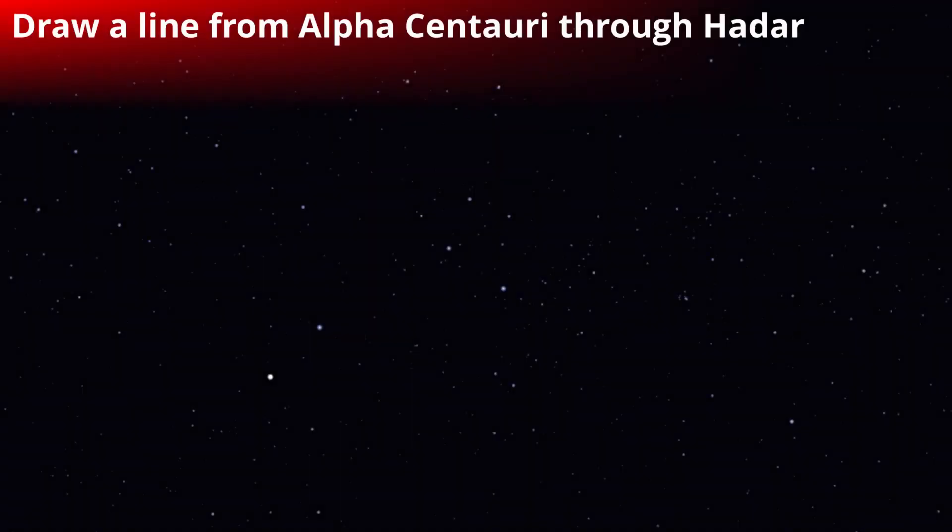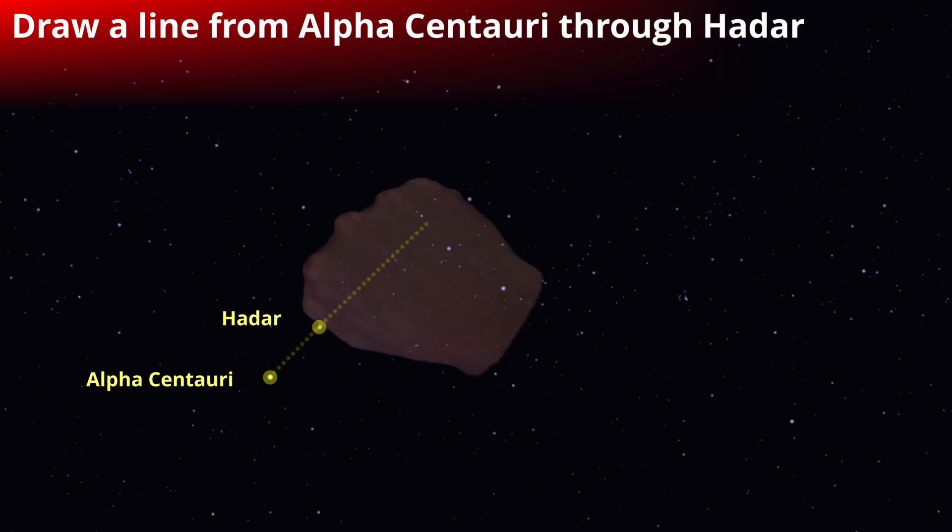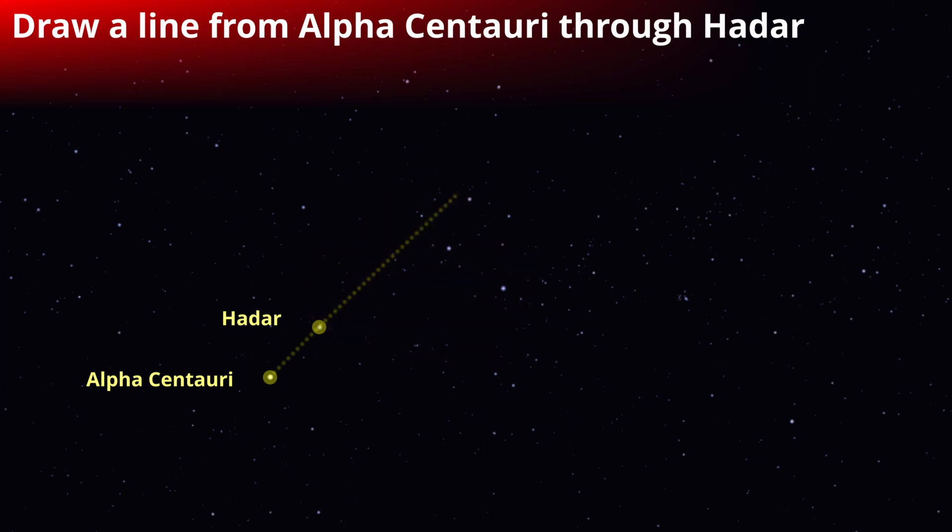You need to imagine a line going from the bright one, Alpha Centauri, through the other one called Hadar, and extending just over a fist width beyond Hadar. The next brightest star you will see will be Gacrux, the star that marks the top of the Southern Cross.